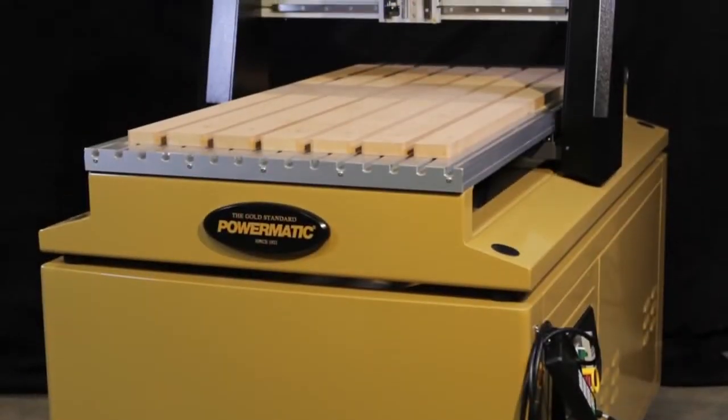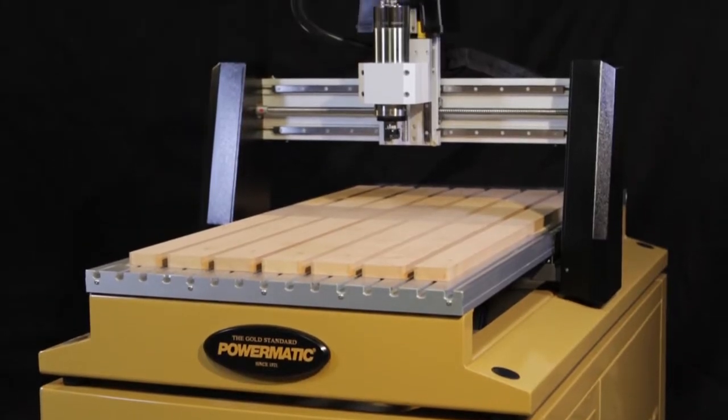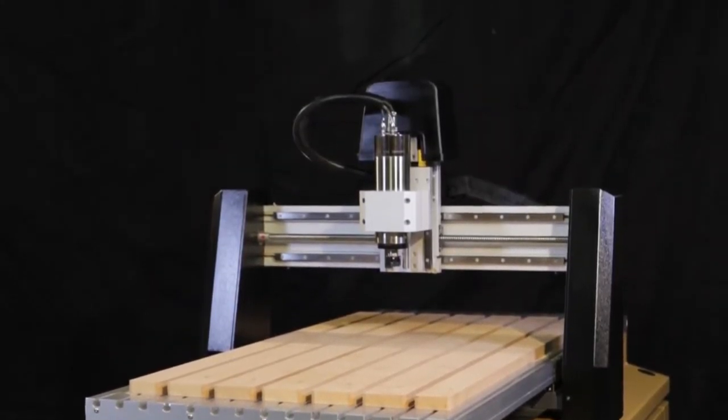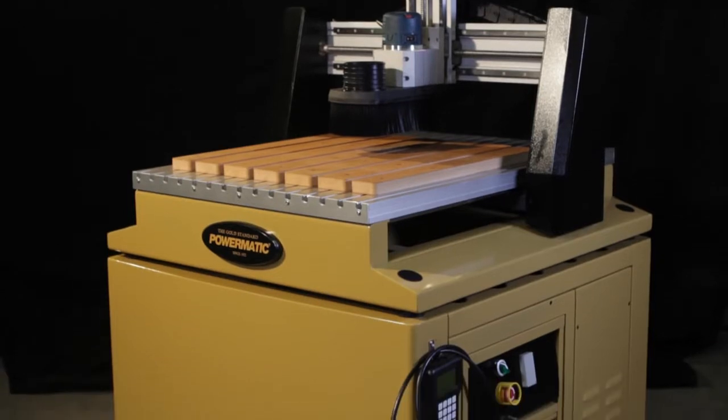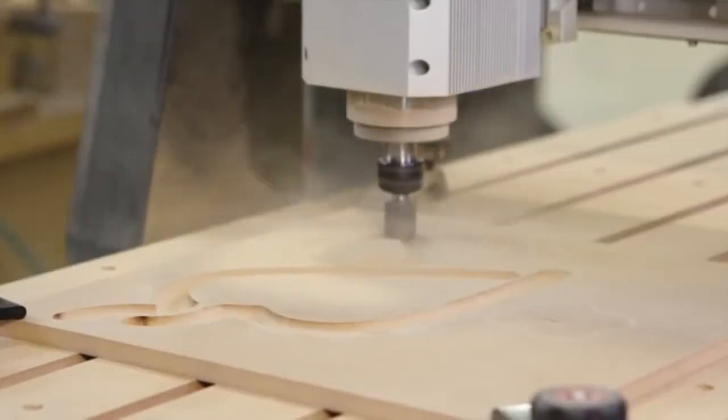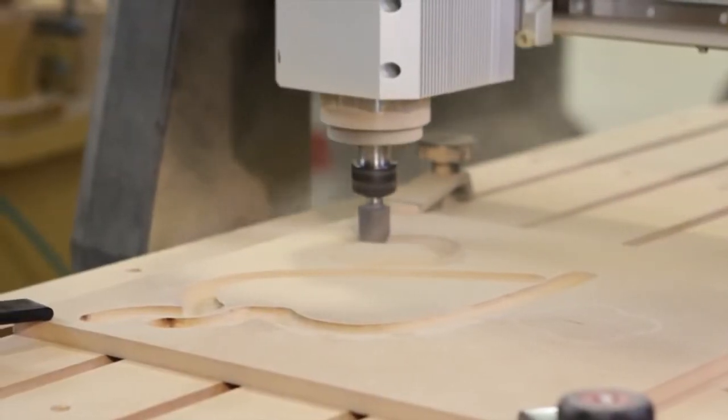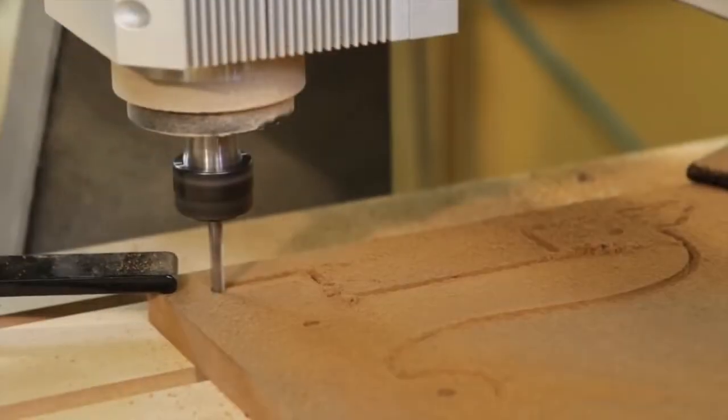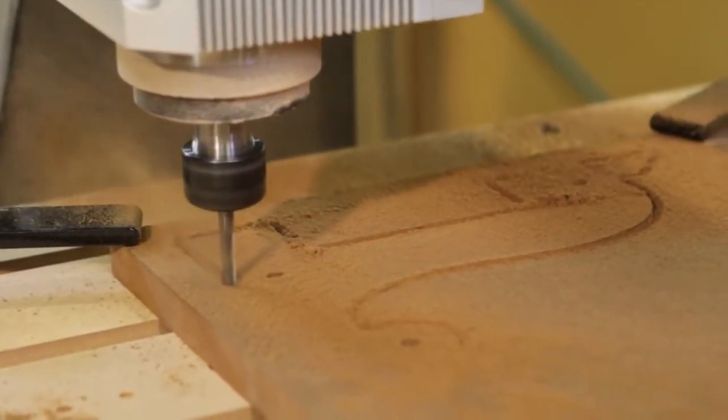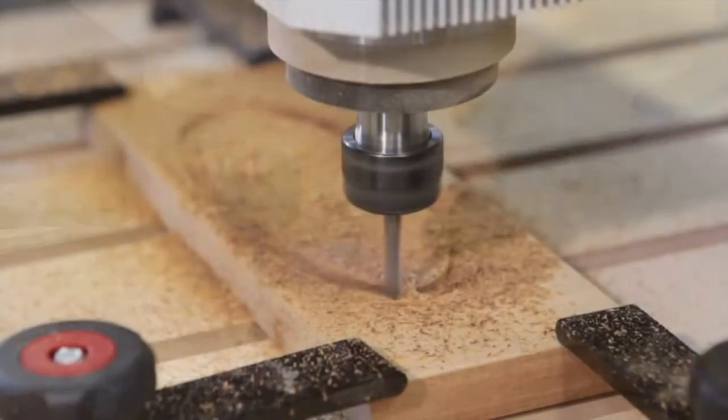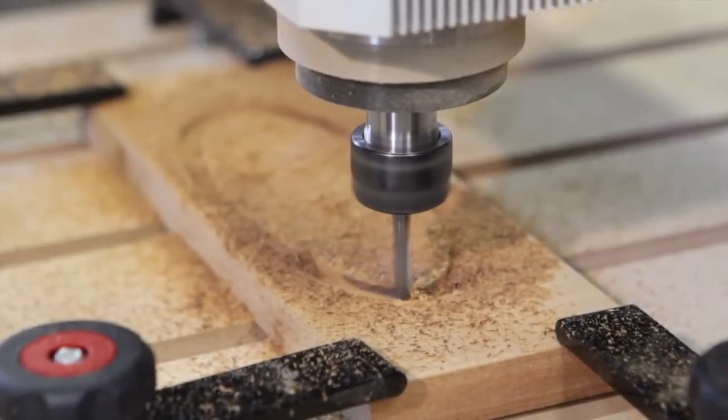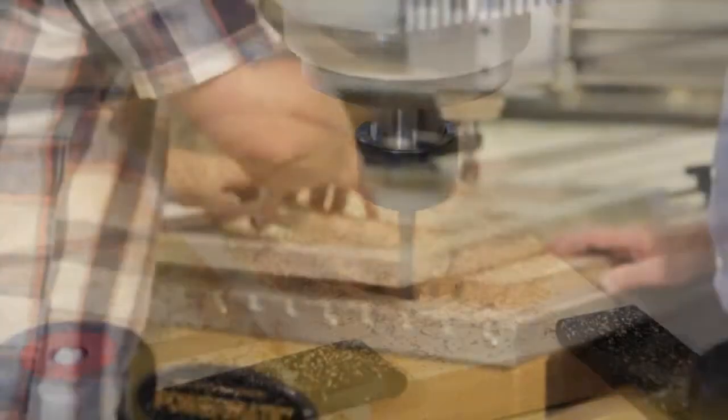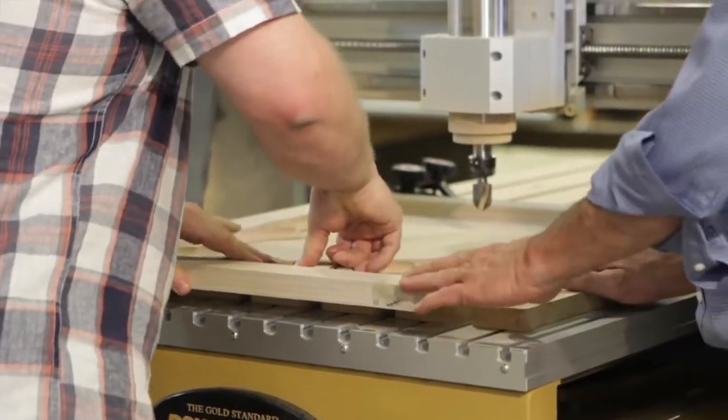I first became interested in adding a Powermatic CNC machine to Vintage Millworks when I realized how many opportunities the technology generated. The ability to create and recreate honest authentic pieces with extraordinary precision at a fraction of the time spoke to me because I was finally able to increase my output without sacrificing any of the authentic craftsmanship that is so essential to me.